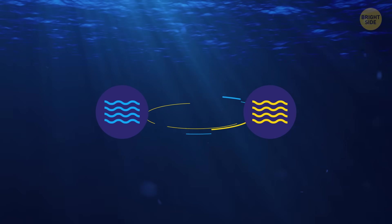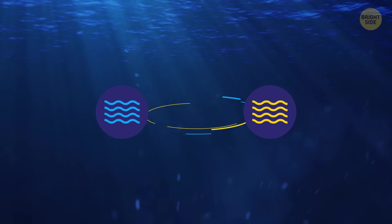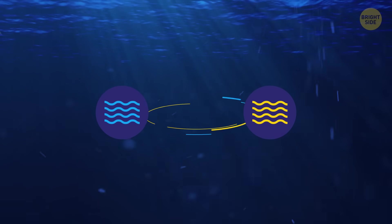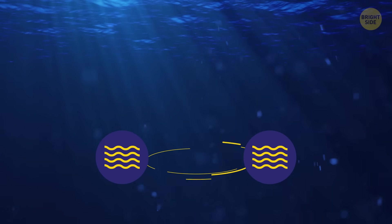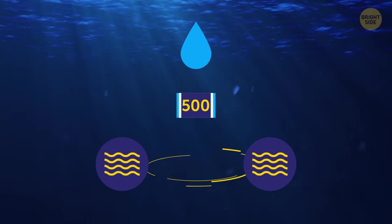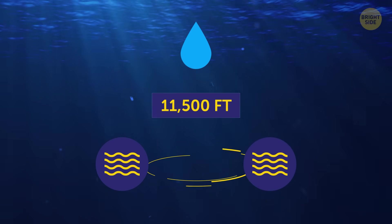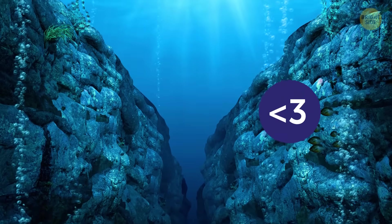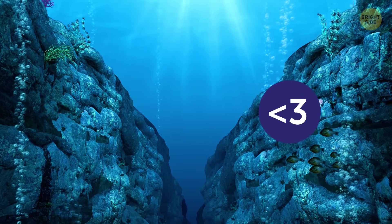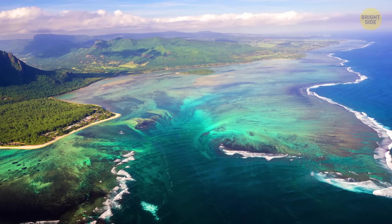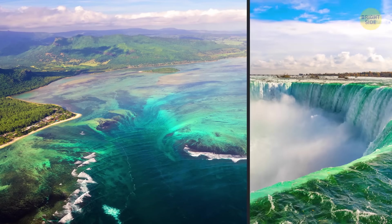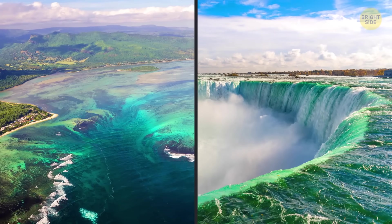There, the Nordic Sea's frigid waters clash with a much warmer Irminger Sea. The temperature difference makes the cold water flow underneath a warmer, creating a drop of 11,500 feet, which is just three times smaller than the Challenger Deep, the deepest place on Earth. The Denmark Strait Cataract also transports 50,000 times more water than Niagara Falls.